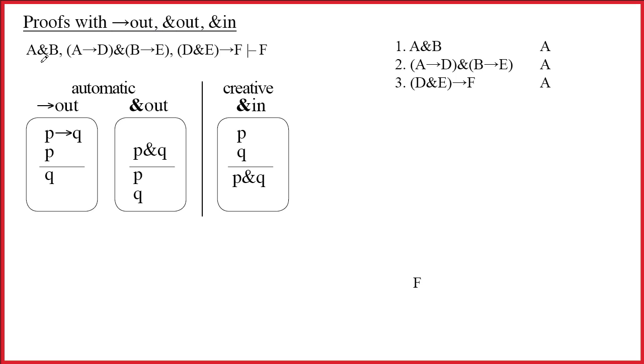Here's the argument. It has three premises: one, two, three, and of course the turnstile introduces the conclusion. So we set it up. We list the premises one, two, three, conclusion down below, and we have our justification column, and every premise is an assumption.